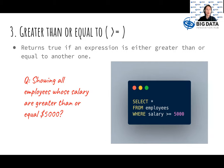Third, the greater than or equal to returns true if an expression is either greater than or equal to another one. Similar to the last example, here we figure out employees information whose salaries are greater than or equal to five thousand dollars.